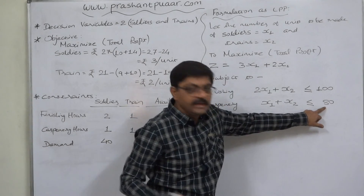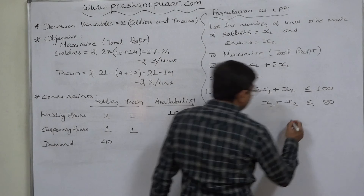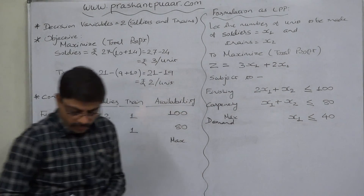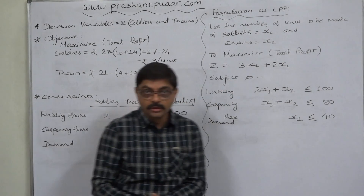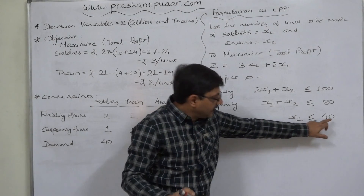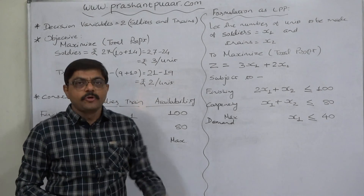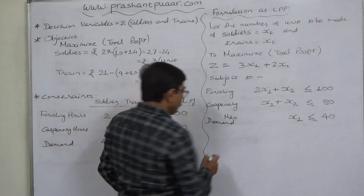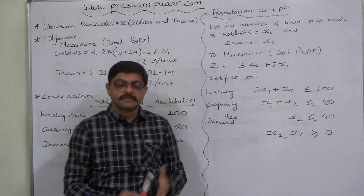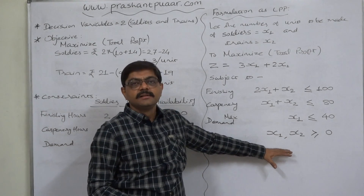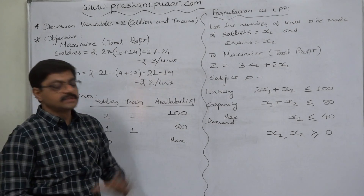The demand constraint is x1 ≤ 40: we cannot manufacture more than 40 soldiers when we know we cannot sell more than 40. Finally, non-negativity conditions: x1 ≥ 0 and x2 ≥ 0, since the number of units of any product can never be negative. Since no integer condition is specified, we do not expressly require x1 and x2 to be integers. This completes the formulation of the LPP.